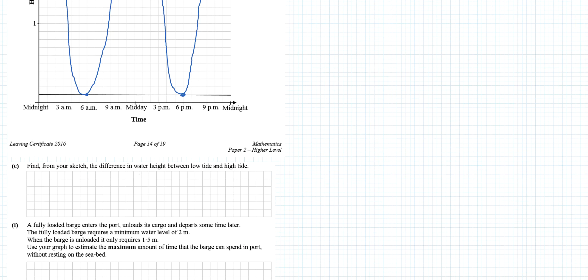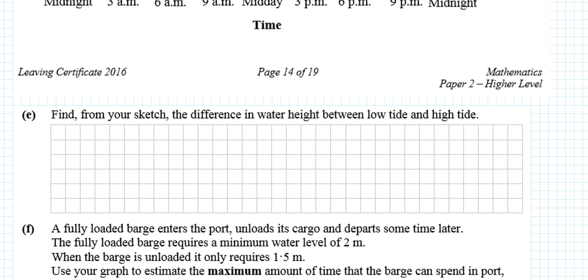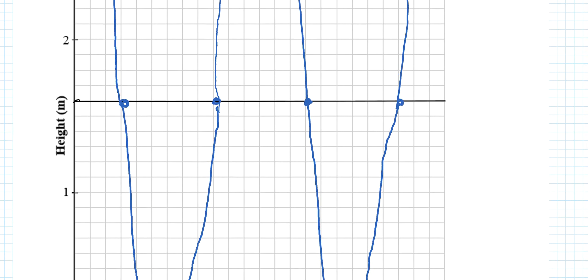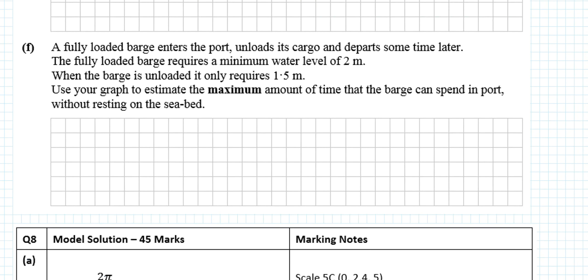The next question: Find from your sketch the difference in water height between low tide and high tide. Well, what's the difference between 3.1 and 0.1? It's 3 meters. That's the difference between the highest and lowest. And you can read that off your graph: 3.1 minus 0.1.